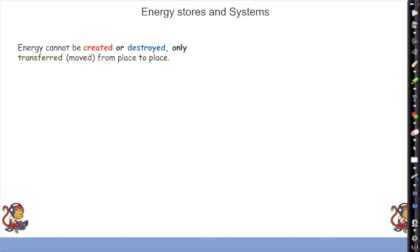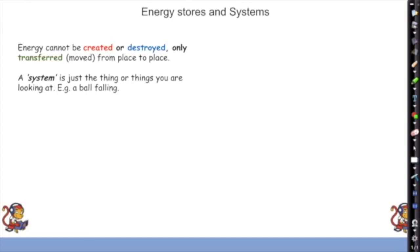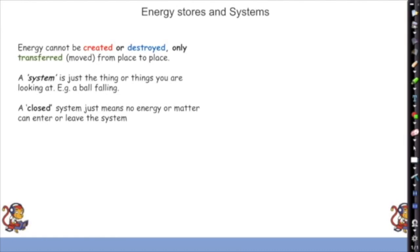One of the most important things about energy is that energy can't be created and can't be destroyed — it can only be moved from one place to another. In this energy stores and systems topic, they may use the word 'system,' which is just a thing or things you're looking at — for example, a ball falling or a can full of gas. A closed system means one where no energy or matter can enter or leave.